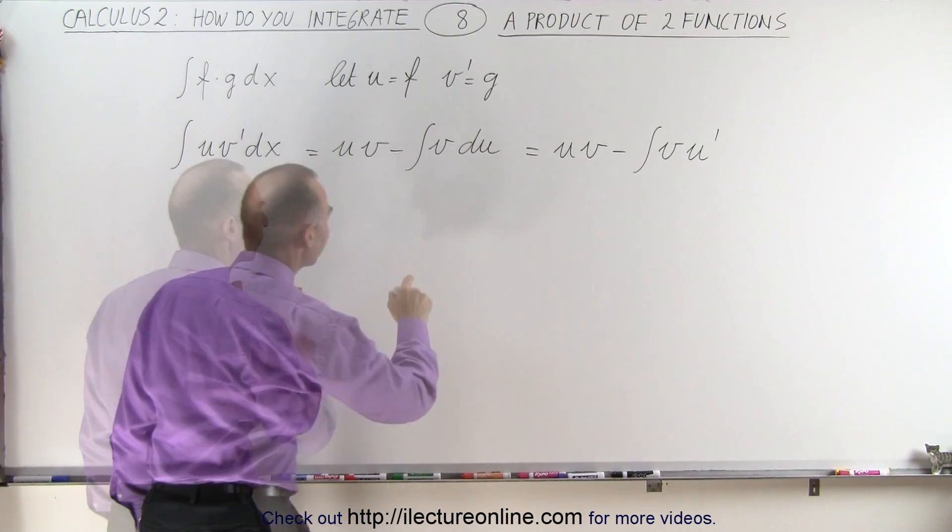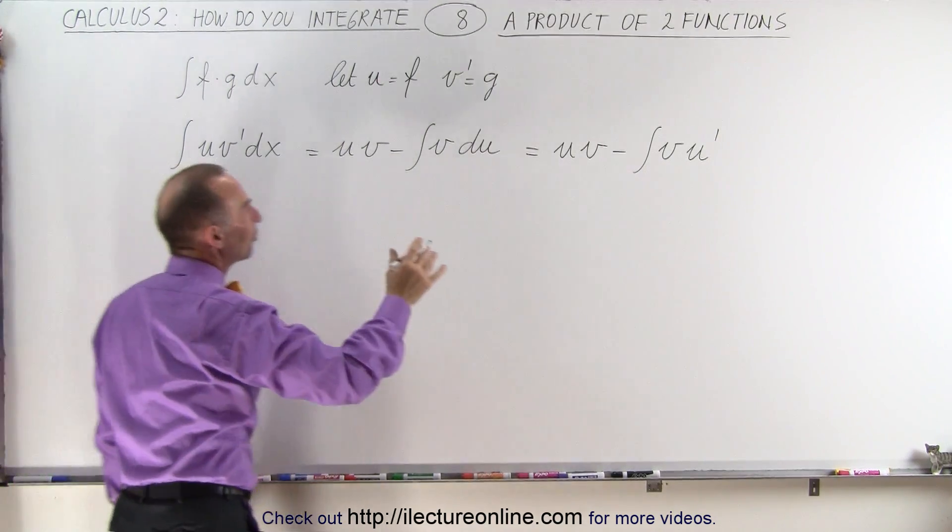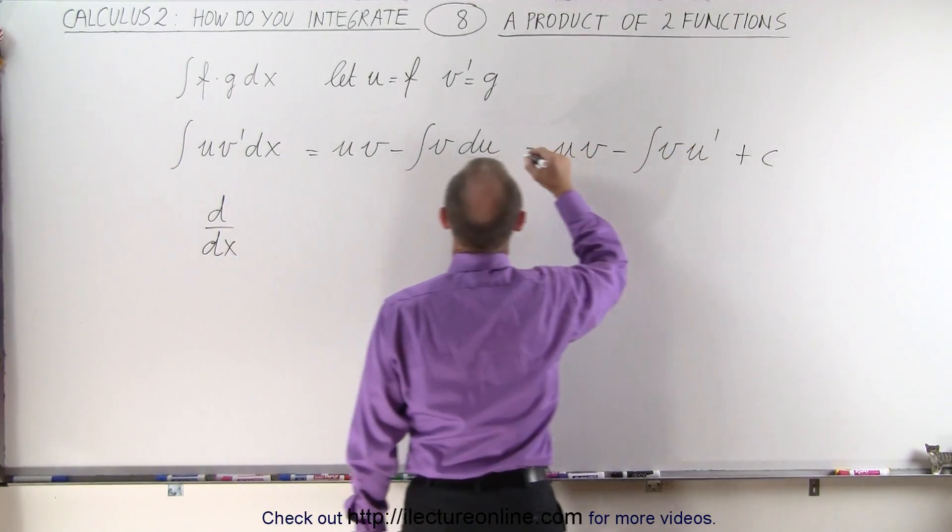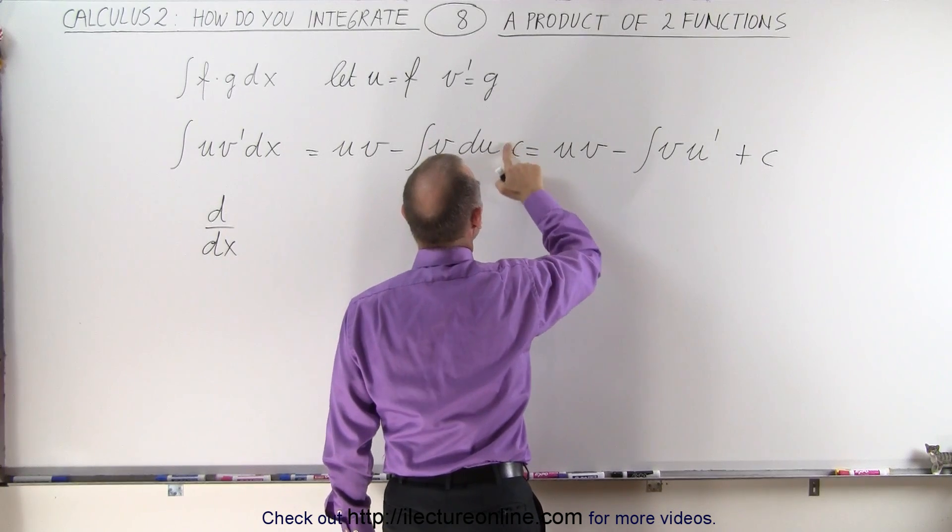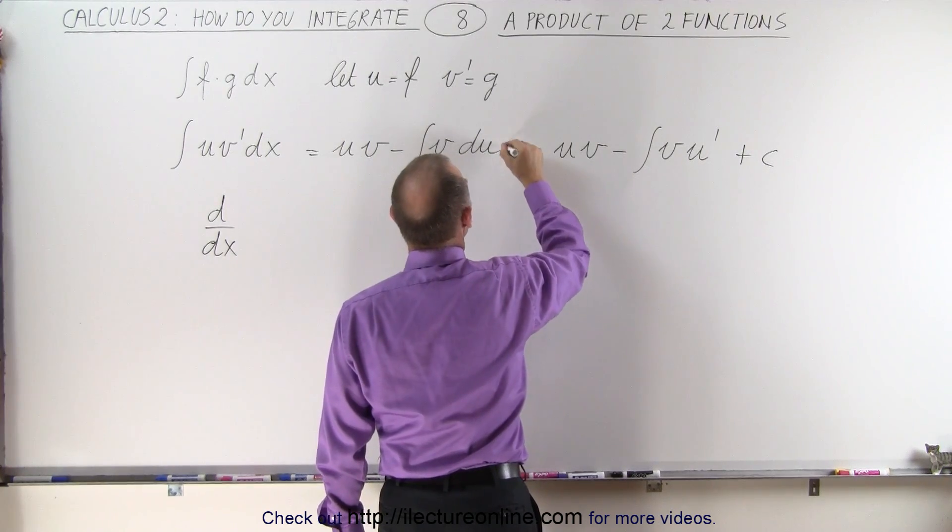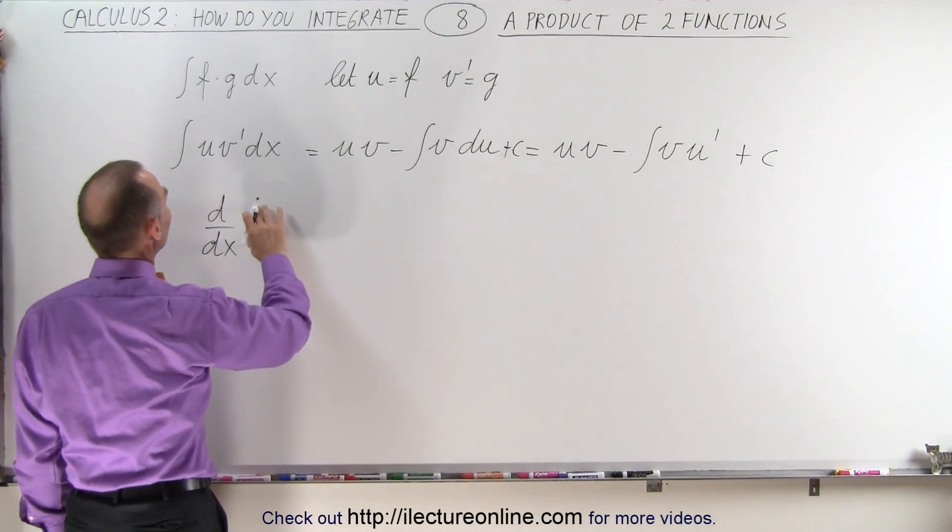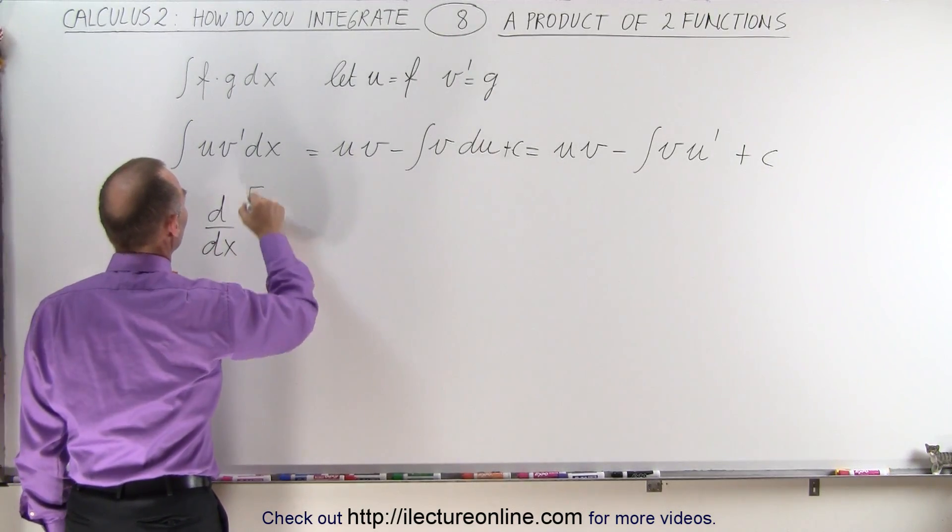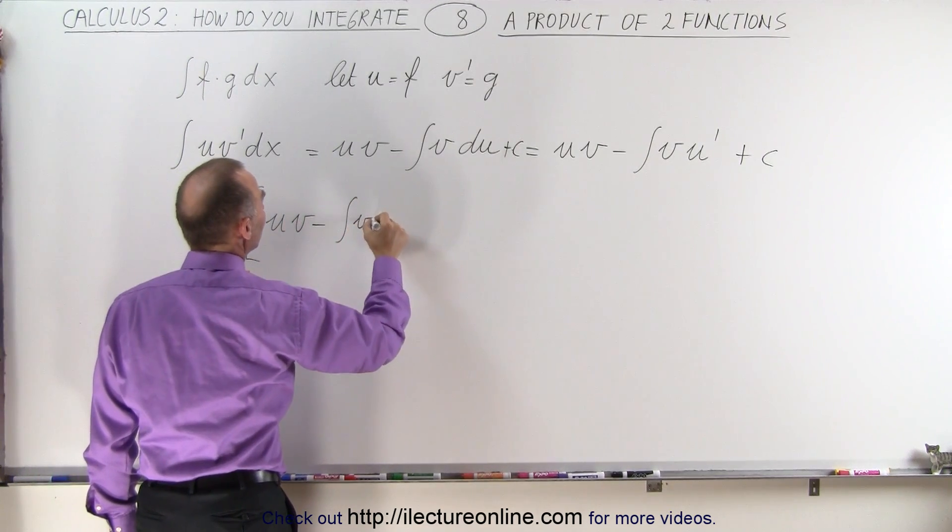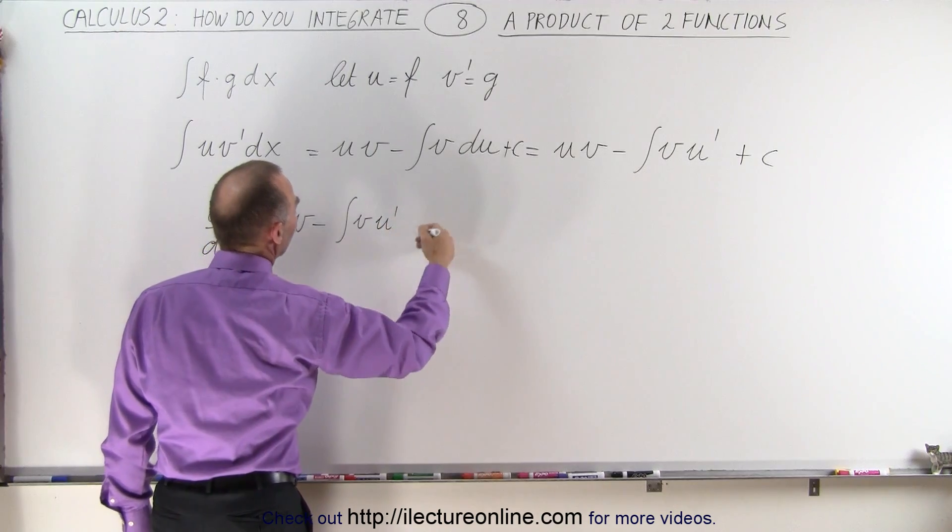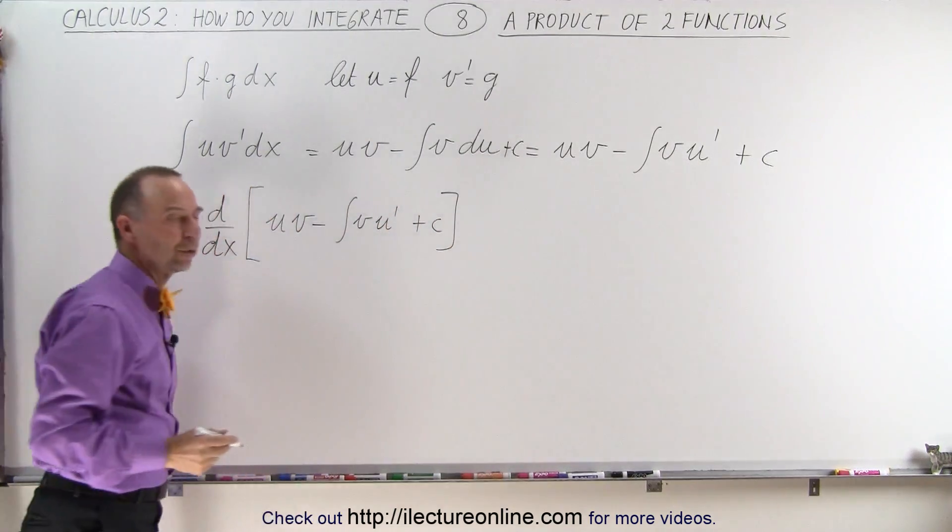Let's see if we do. So we're going to take the d dx of our result and of course we have a constant of integration. Typically we leave off the constant of integration because it makes it easier and cleaner. But just so you know that yes indeed there is a constant of integration there when we integrate. So now let's take the derivative of this and we're going to take the derivative of u times v minus the integral of v u prime. And of course the derivative of a constant is equal to zero so that will drop off anyway.